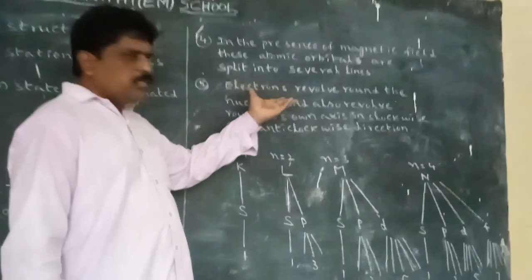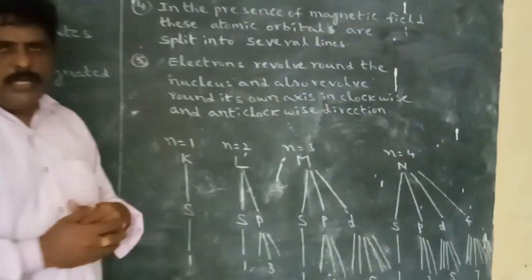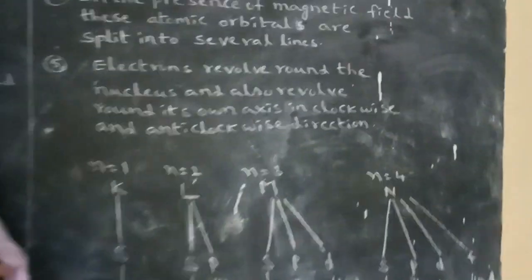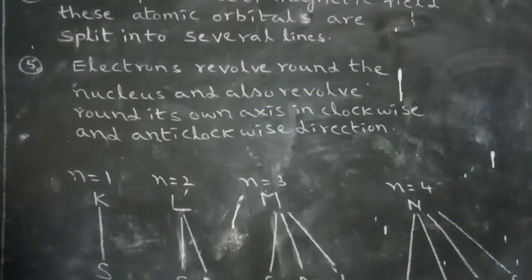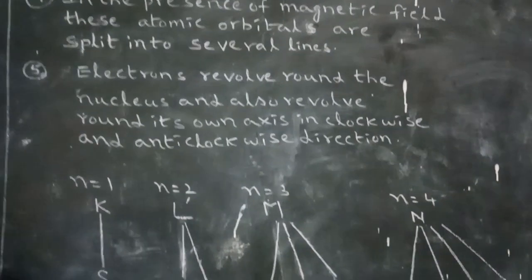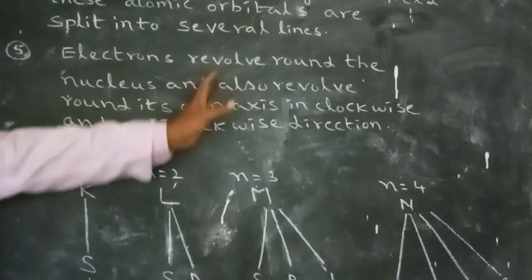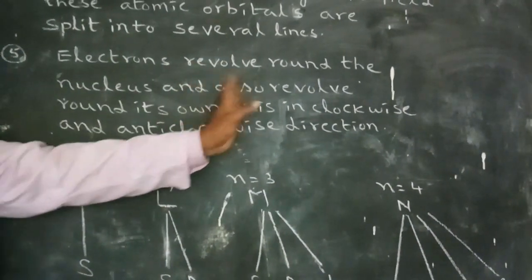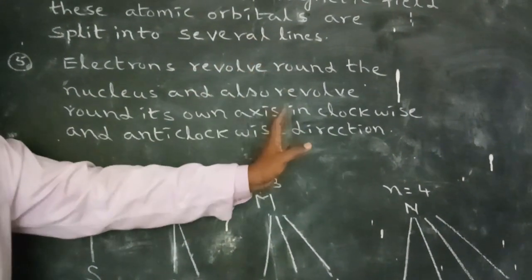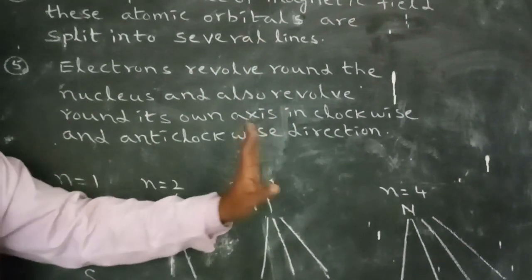Electrons revolve around the nucleus. Another important point is that electrons revolve around the nucleus and also revolve around their own axis.